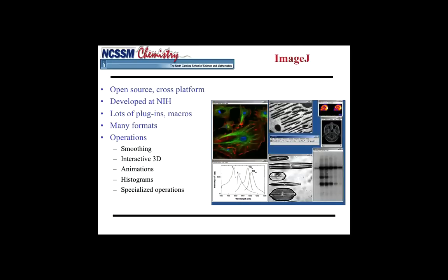ImageJ is a great program. It's open source and cross-platform. It's developed at the National Institutes of Health. One of the really nice features about ImageJ is there's lots of plug-ins and macros, and you will use some astronomy plug-ins and macros for the labs in the computational science online course. It can read in many types of formats of data, so lots of options there. And it has lots of operations like smoothing and interactive 3D and animations and histograms and lots of specialized operations. You can spend a whole semester learning how to use ImageJ with all the stuff that is built in with that.